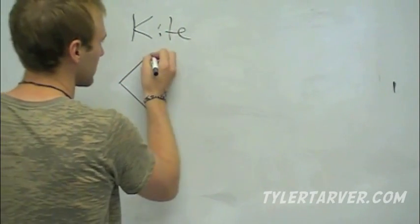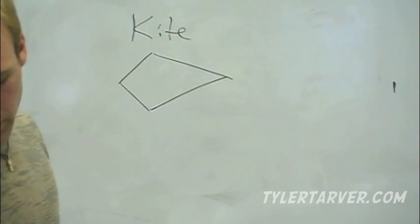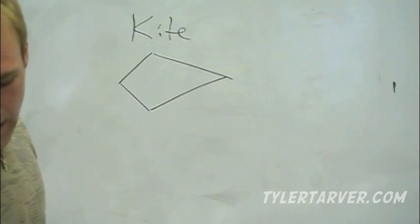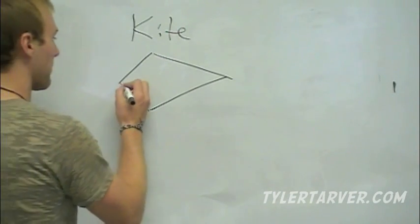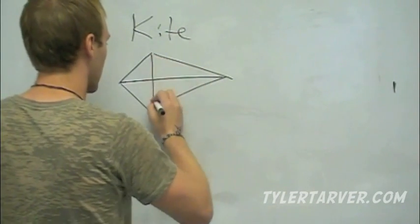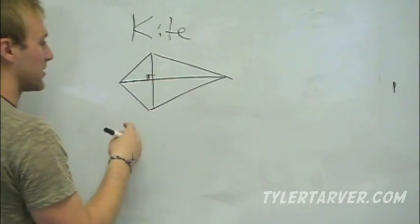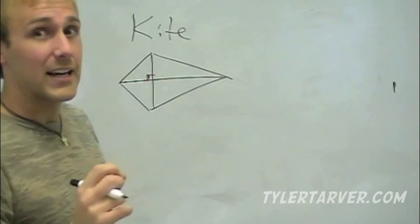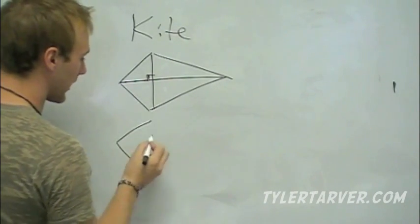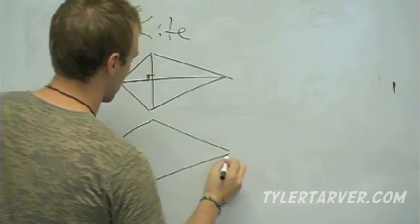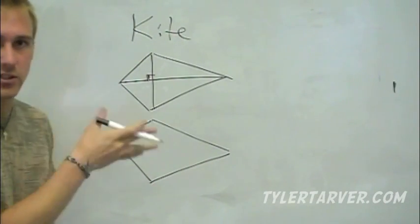Let me read it straight out of the book. If it's a kite, then the diagonals are perpendicular — just like in a rhombus, but this is not a rhombus. In a kite, the diagonals are perpendicular, which I've marked.